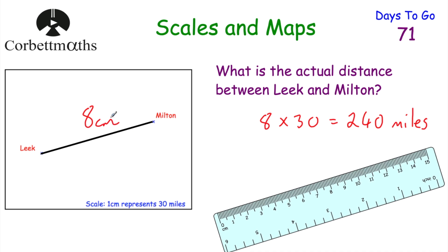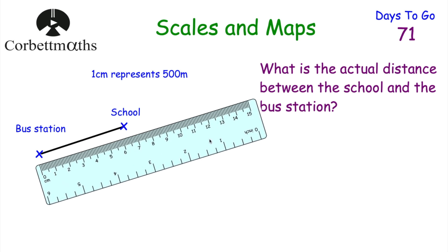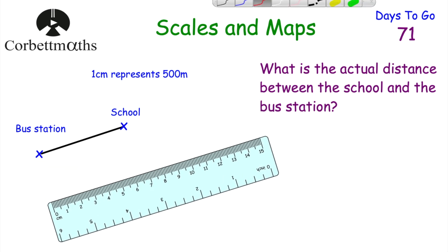If we measured this and instead of exactly 8 centimetres we got 8.2 centimetres, we would do 8.2 multiplied by 30 to find the real-life distance. Here's a question for you to try: we've got a bus station and a school, and we're told the scale is 1 centimetre represents 500 metres. The question is: what is the actual distance between the school and the bus station? If we measure the distance between them, we get 6 centimetres. Feel free to pause the video now and work out the answer.